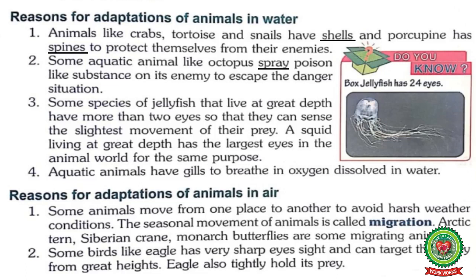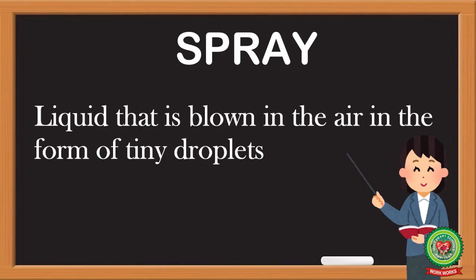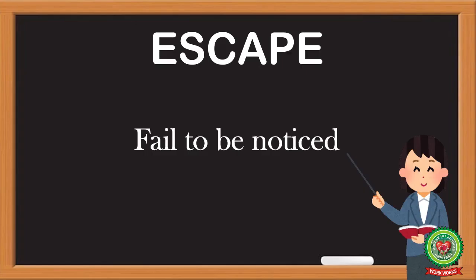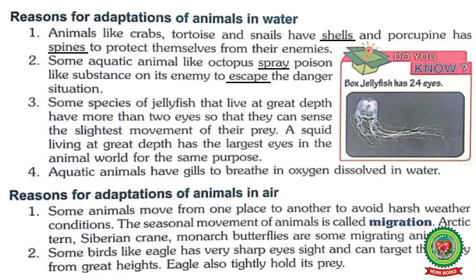Number two: some aquatic animals, like octopus, spray a poison-like substance on their enemy to escape a danger situation. Underline the word 'spray' and write down its meaning: liquid that is blown in the air in the form of tiny drops. Underline the word 'escape' and write down its meaning: fail to be noticed.